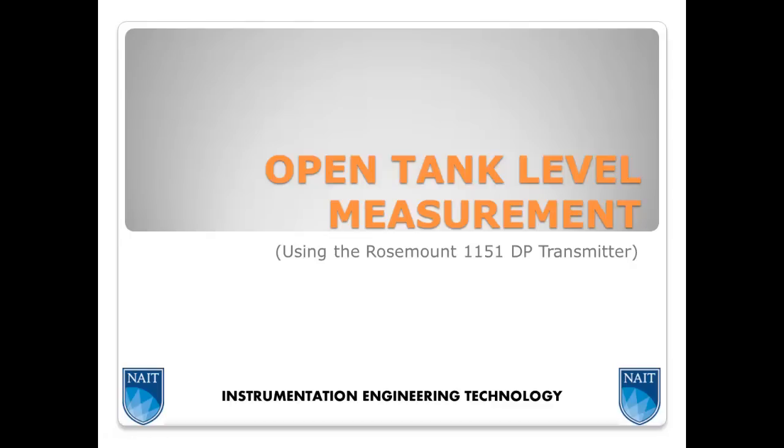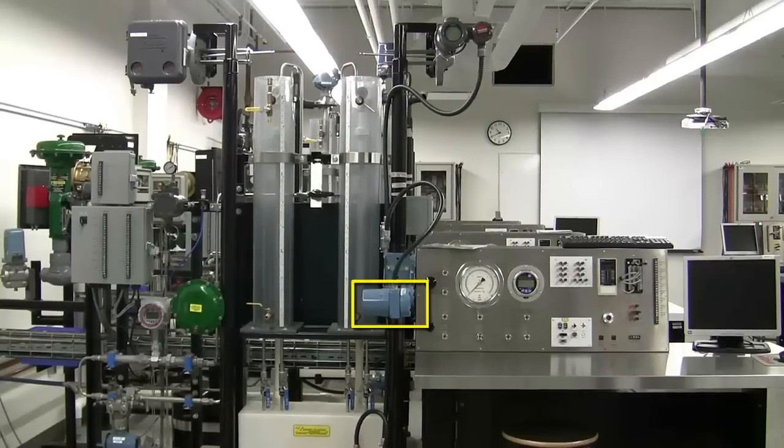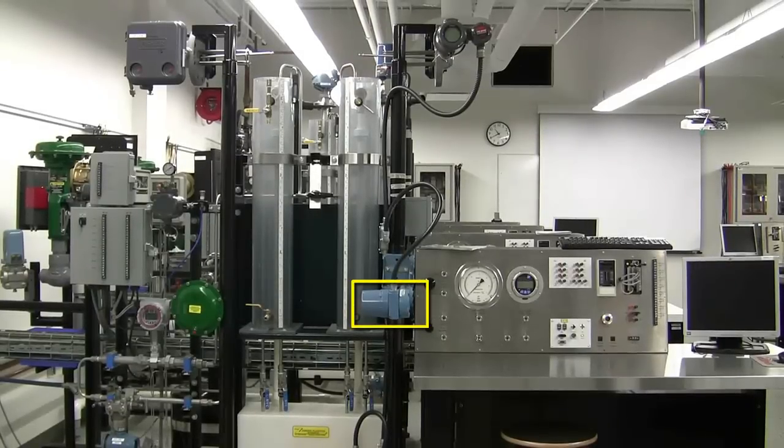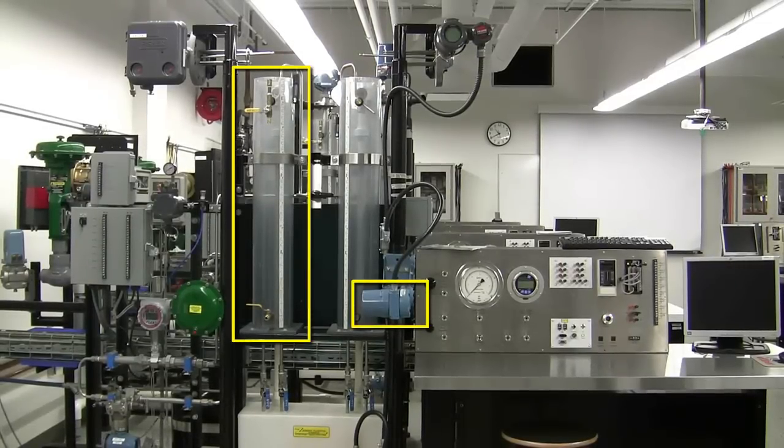This tutorial video will show how to set up a level measurement system using the Rosemount 1151 DP transmitter. The Rosemount 1151 DP transmitter is mounted on a pole beside the lab bench and will be used to measure the level in an open tank located nearby.